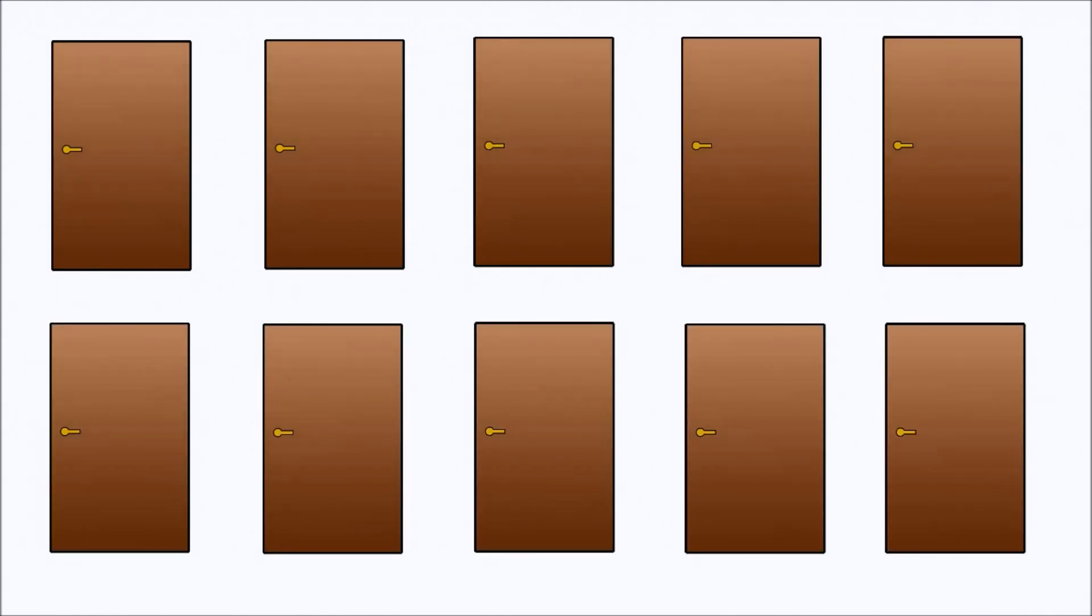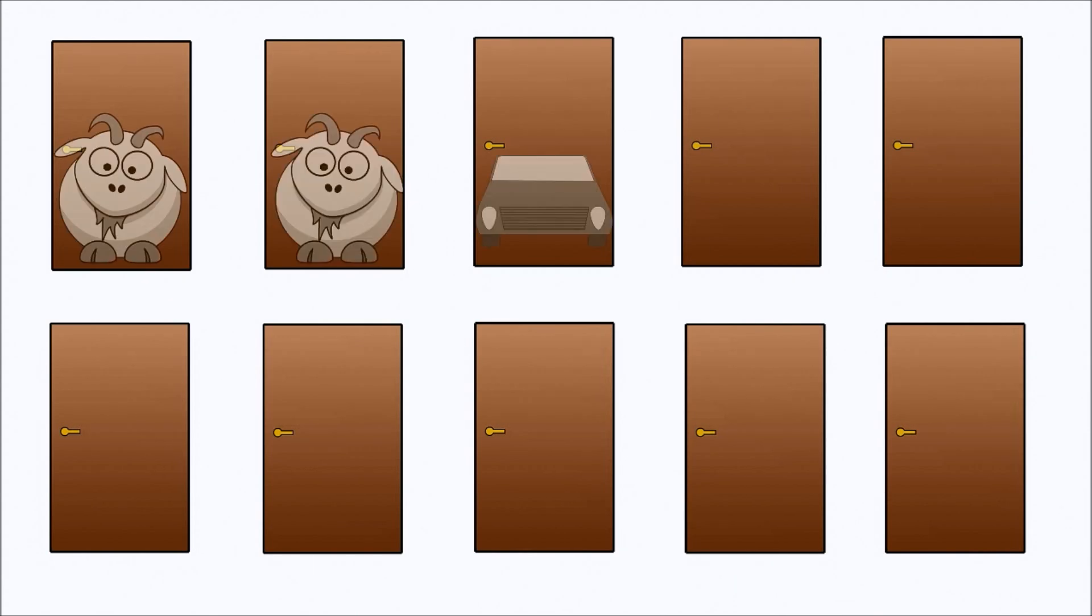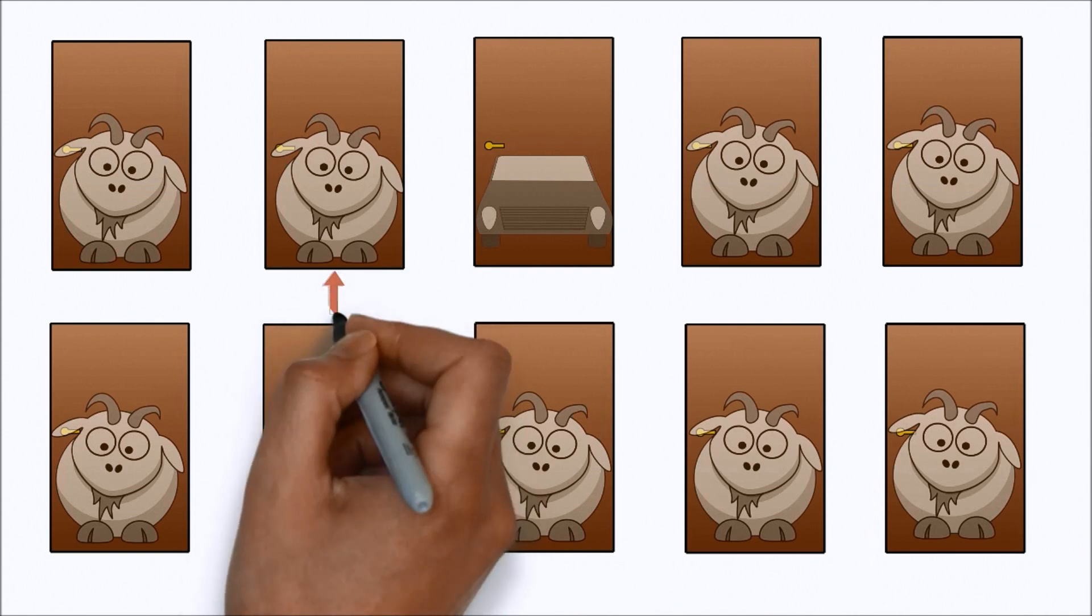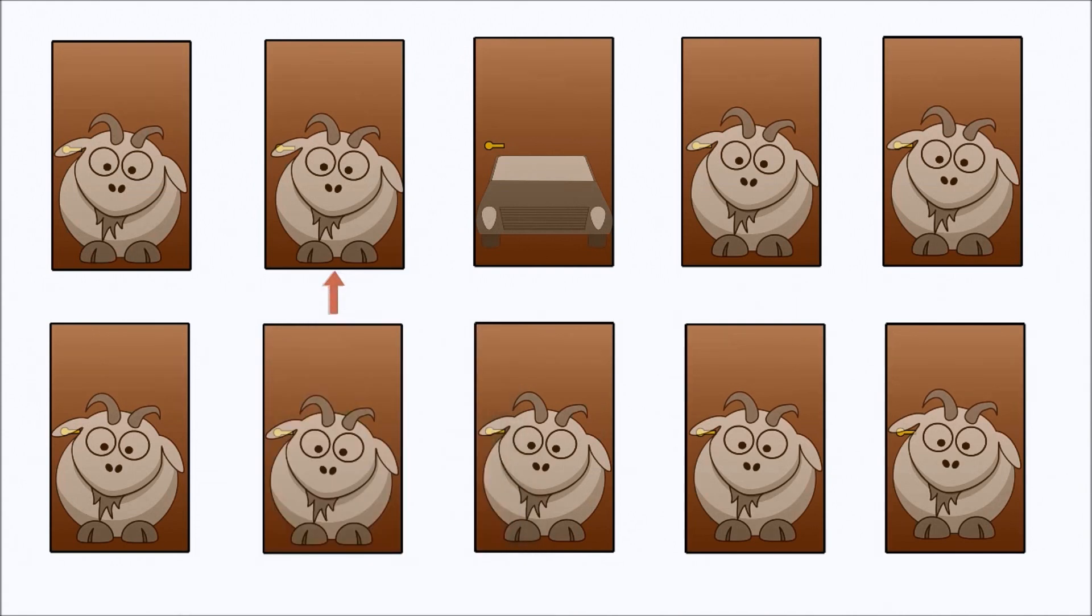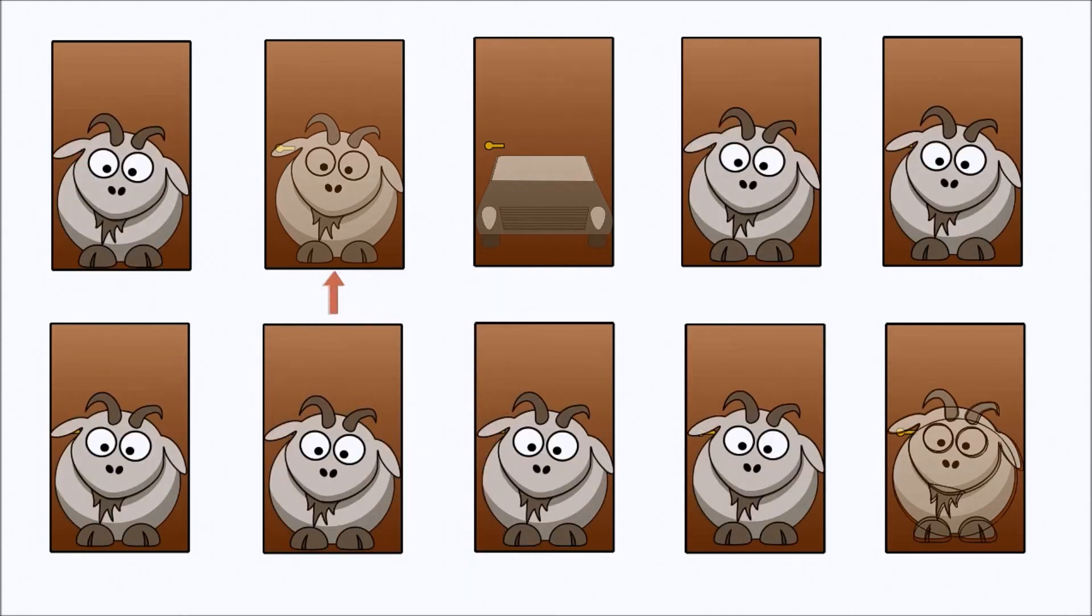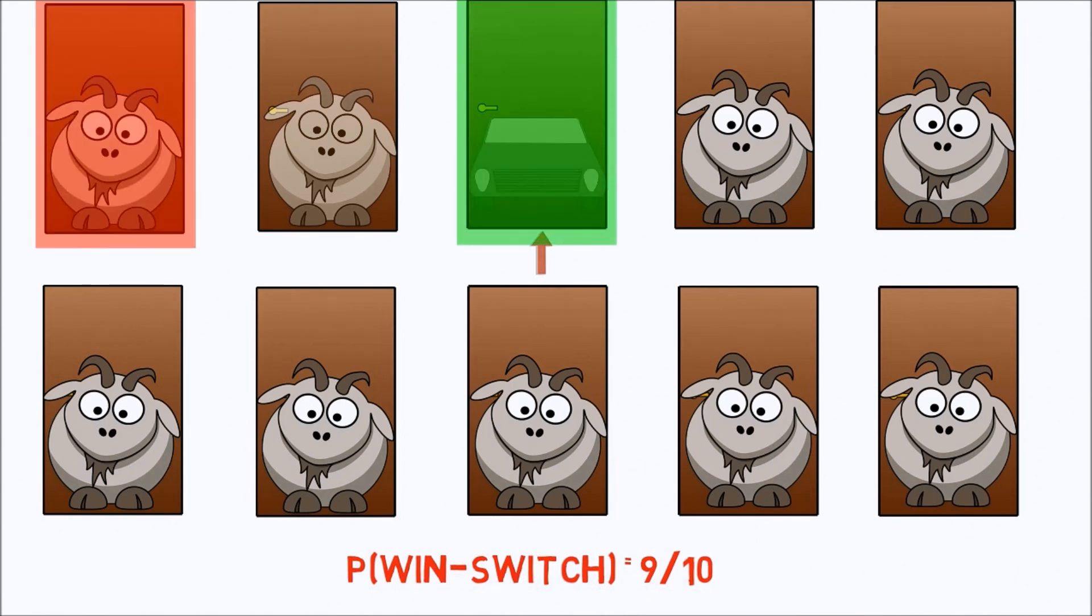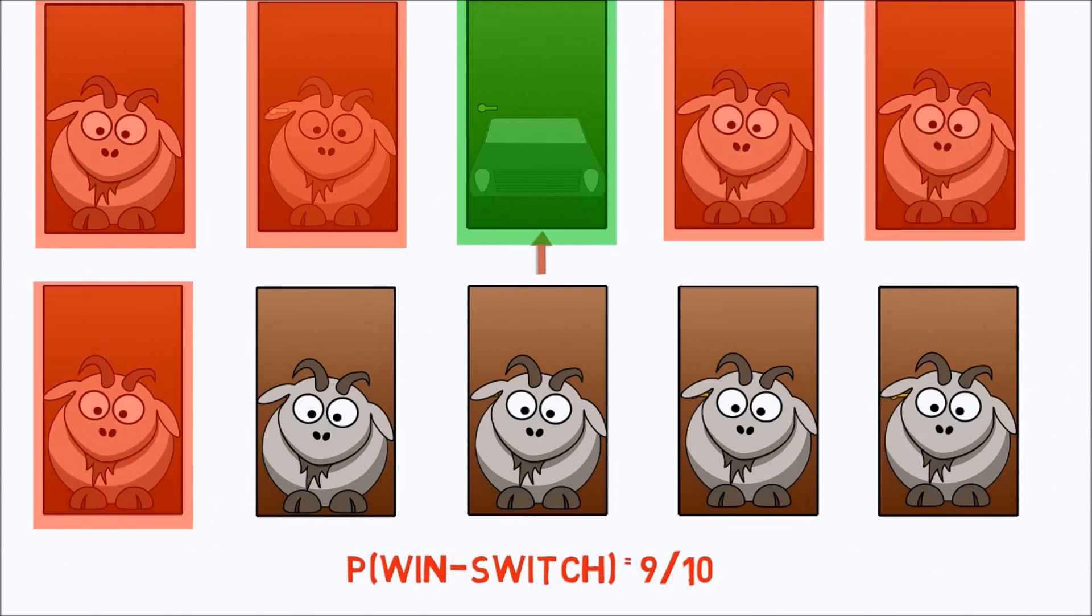With increasing number of doors, probability of winning by switching door increases. Let's assume there are 10 doors to pick from in the beginning. You pick one door. Monty looks at the 9 others, finds the goats, and opens all but one. This time winning chances by switching the doors will be 9 by 10, because you'll lose only in one case here, when you choose the door with car in first guess. Rest 9 choices will lead you towards win.